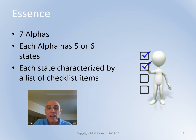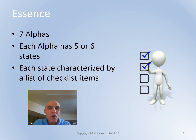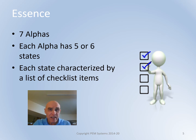As most of you who know anything about essence are aware, essence has seven alphas — the alphas are the most important things we work with — and each alpha has five or six states. What I don't think gets the attention it deserves is the list of checklist items that characterize each of those states. That is what I want to focus on, because I believe it is the checklist items that we can use to help explain and teach our next generation of new professionals how to go about improving any method.